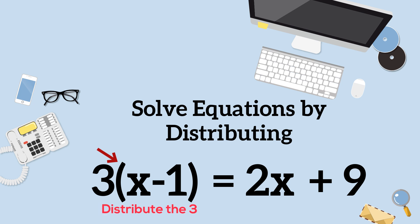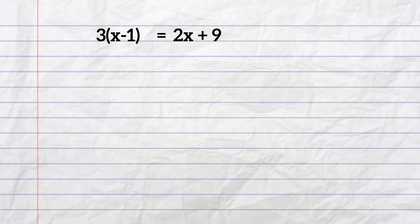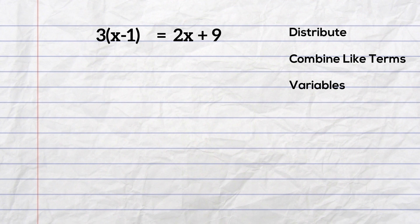Whenever you solve an equation like this, the order that you should follow is to distribute first, then combine like terms, then move all the variables to the left of the equal sign, and the constants or numbers to the right.